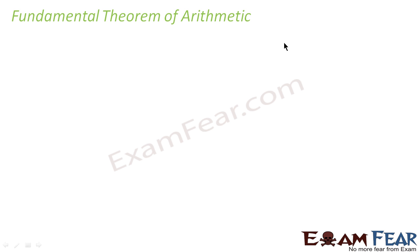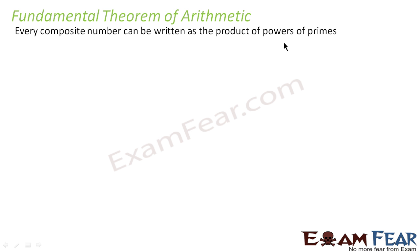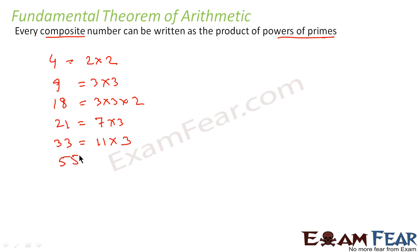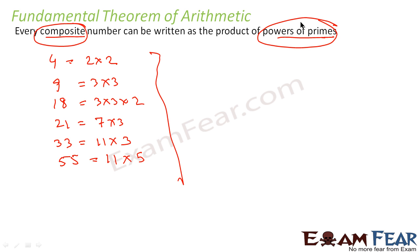Let's understand the fundamental theorem of arithmetic. The fundamental theorem of arithmetic says that any composite number can be written as a product of prime numbers. For example, 4 is a composite number — I can write 4 as 2 into 2. I have 9 as a composite number — that is 3 into 3. I have 18 — that is 3 into 3 into 2. Similarly, 21 is 7 into 3, 33 is 11 into 3, and 55 is 11 into 5. So any composite number can be written as a product of primes — that is the fundamental theorem.